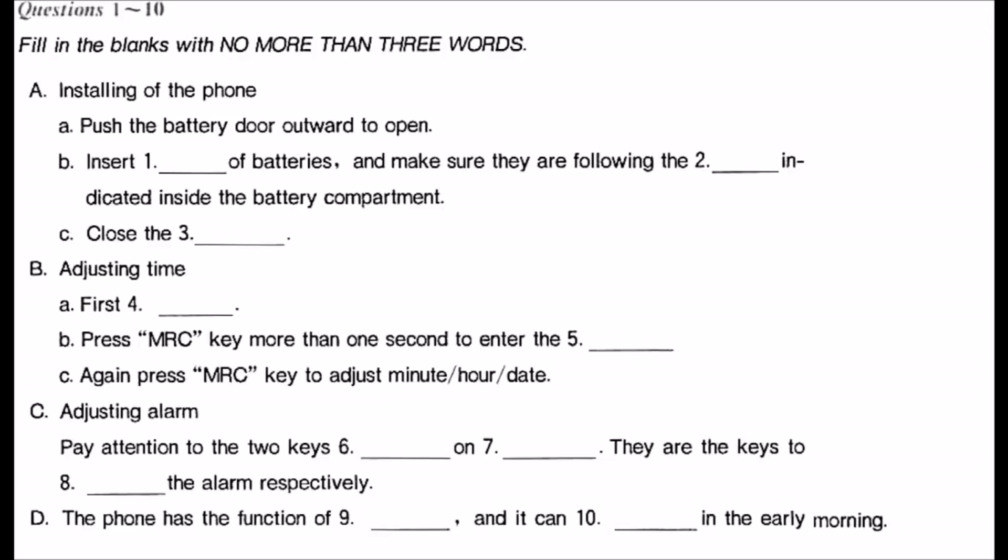Now it comes to adjusting alarm. Press alarm key to enter the three states of A1, A2, A3. Pay attention to the two keys in the corner on the right hand. They are the keys to lock and unlock the alarm respectively. Press MRC key to enter the adjusting procedure. And have you seen the second digit begin to flash? Yes, I think I should repeat this action. Yes. Press MRC key again to adjust minute and the on-off of the alarm. By now, you own a phone at the same time with a clock that can wake you up in the early morning.